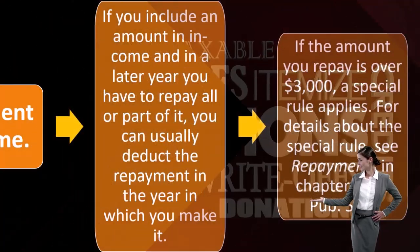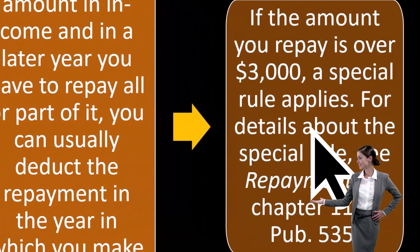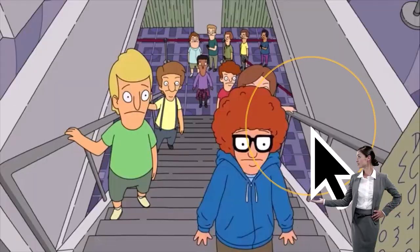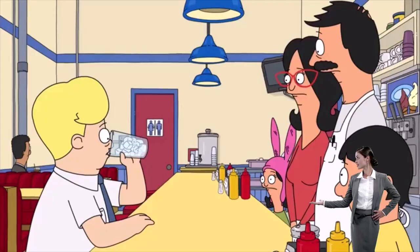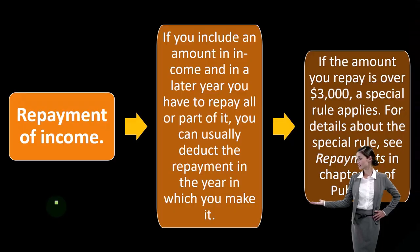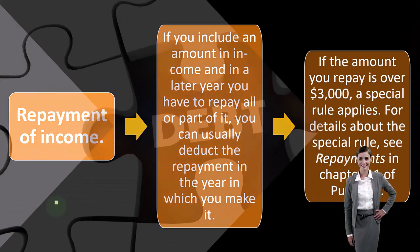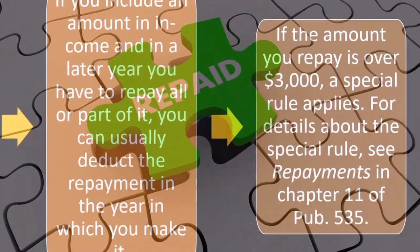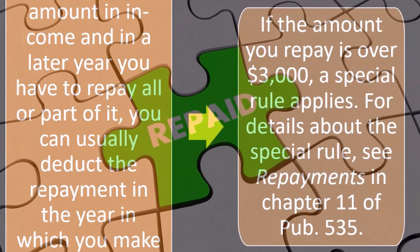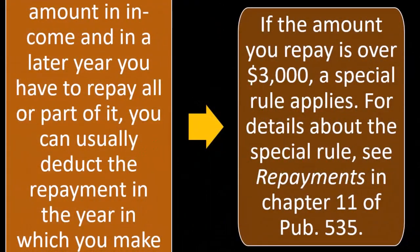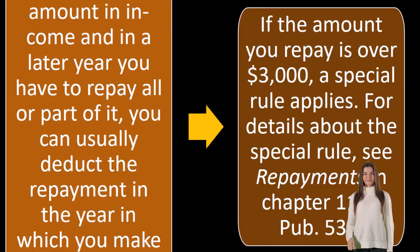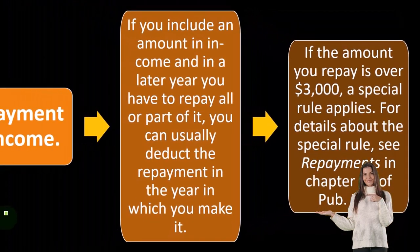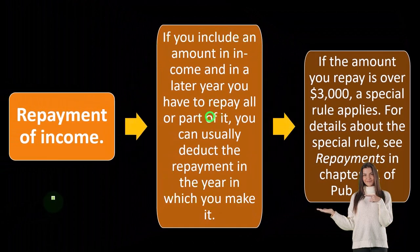If the amount you repay is over $3,000, special rules apply. For details about the special rules, see repayment in chapter 11 of publication 535. If it gets significant in dollar amount, the IRS might start to get skeptical that you're doing something manipulative, because now you're recording income and deducting it in a following year.